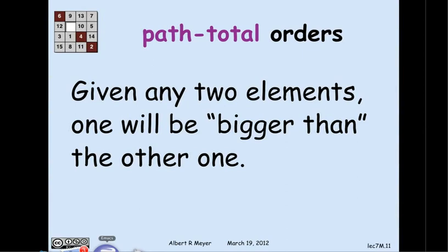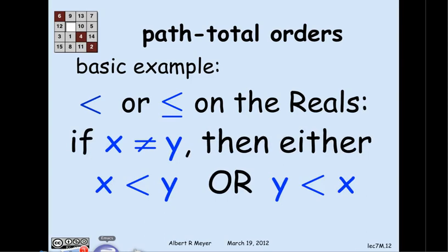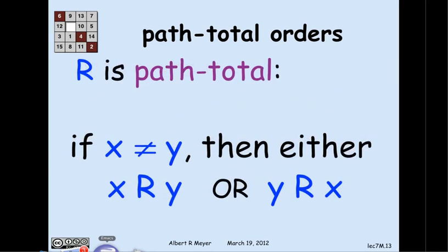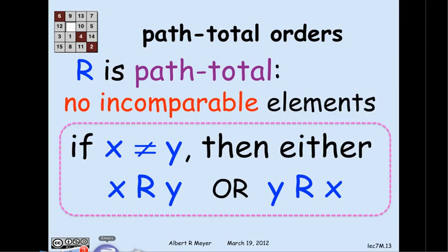Another important property of partial orders is being path total, or linear as some authors call it. The definition is that given any two elements, one is going to be bigger than the other with respect to the relation. The most familiar example is the less-than relation on the reals: given any two distinct real numbers x and y, either x is less than y or y is less than x. Formally, if x is not equal to y, then either x r y or y r x. A relation with that property is called path total, meaning there are no incomparable elements under r.